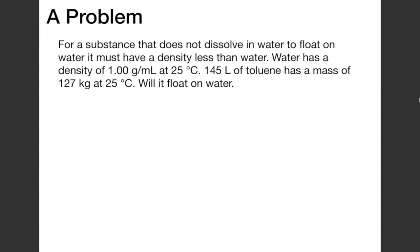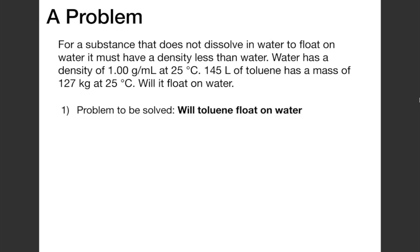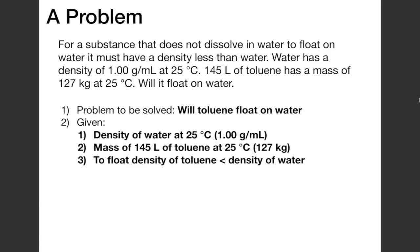We're now going to go through and solve a problem that we haven't seen before, applying the steps that we laid out. The first step is to identify the problem to be solved. Going through and reading, the problem we're trying to solve is: will toluene float on water? In the second step, we have to determine what information is being given to us in the problem. The information given includes the density of water at 25 degrees C, which is one gram per milliliter.